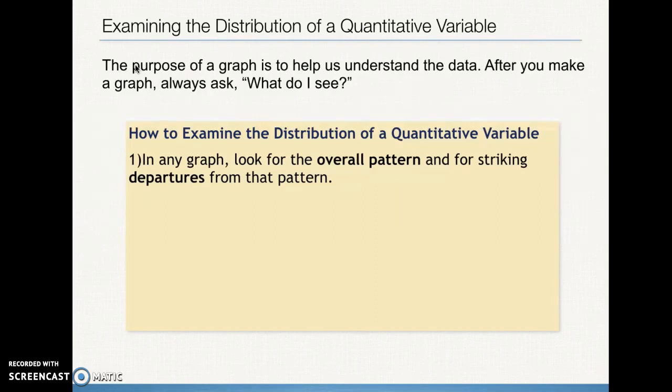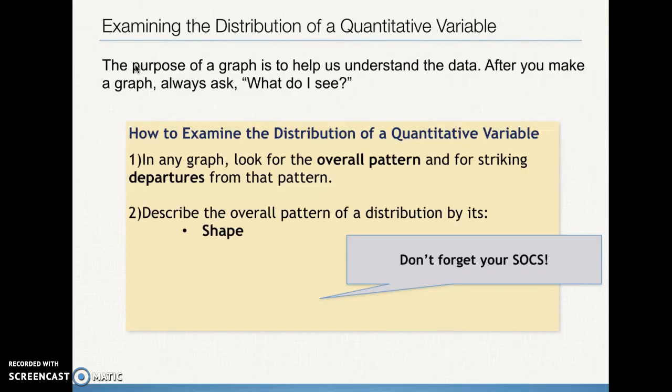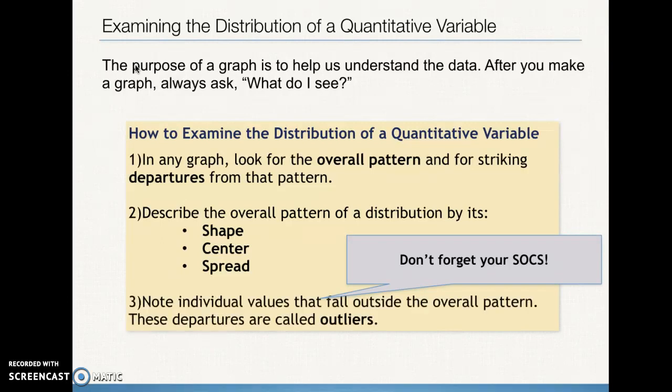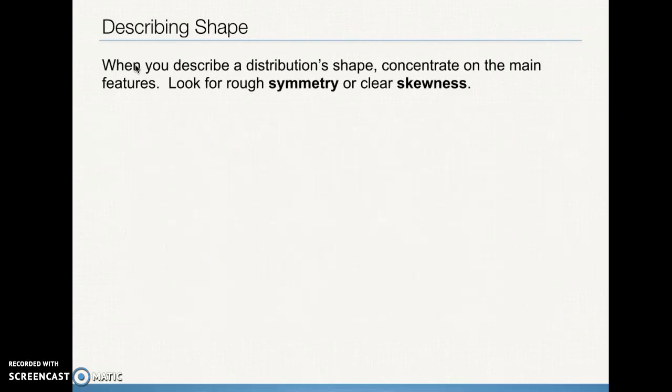Every time we see a graph, we want to be able to have a good understanding of what's going on. So we're going to be looking at specific things. To begin with, we're going to be looking at the overall pattern, and then we're going to be looking at departures from the pattern. So we see the little mnemonic, don't forget your socks. I'm actually going to ask you to do G socks some of the time and socks most of the time. So what do those different letters stand for? We're going to see what some of the possible shapes are. The O actually stands for outliers. The C stands for center. And the last S stands for spread, and spread is another way of saying variability.